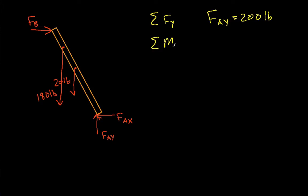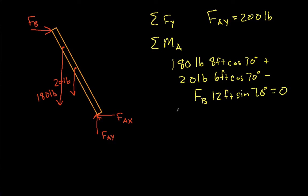If we look at the summation of the moments about A, the only thing that's changed here is that our 180-pound man is now at 8 feet up the ladder, as opposed to 4 feet. So we'll have then 180 pounds times 8 feet cosine 70, plus 20 pounds 6 feet cosine 70, minus FB 12 feet sine 70 equals zero. If we solve this for FB, that's the same as the last one we solved on Wolfram Alpha, except you change one number. This gives us FB is 47.3 pounds.